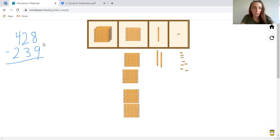So when we're looking at our problem, we start on our unit side and we look at it wants us to take nine from eight, but we can't do that because nine is a bigger number than eight. So what we're going to have to do is we're going to have to go to our 10 spot and borrow a 10.